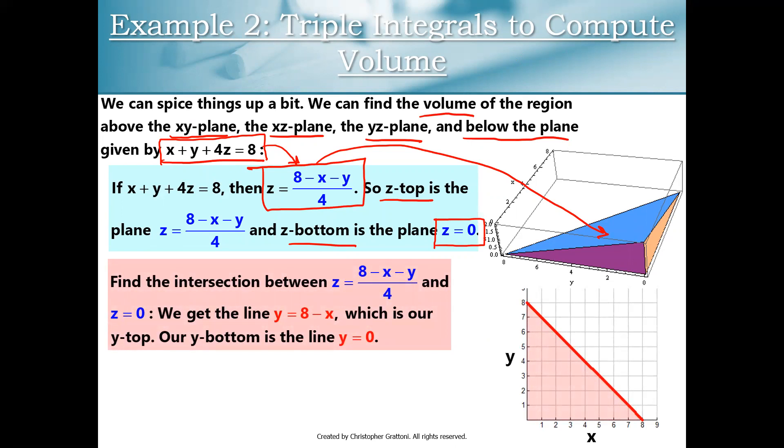Z top is this equation: Z equals 8 minus X minus Y over 4. And Z bottom is the XY plane, also known as Z equals 0. To set up this triple integral, you do have to use a little bit of your algebraic background. We want to think about the intersection between Z top, this plane right here, and Z bottom, Z equals 0.